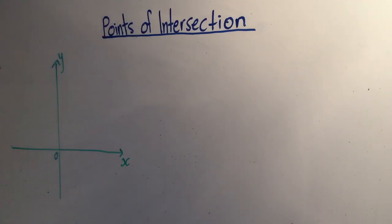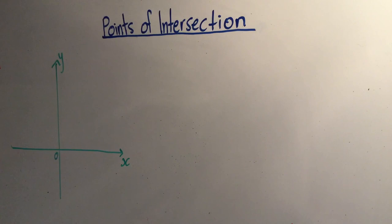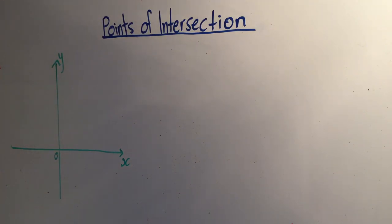Hey guys, welcome back. Today we're going to be looking at how to find the points of intersection of two lines, where one of those lines is a parabola and the other line is a straight or linear line.